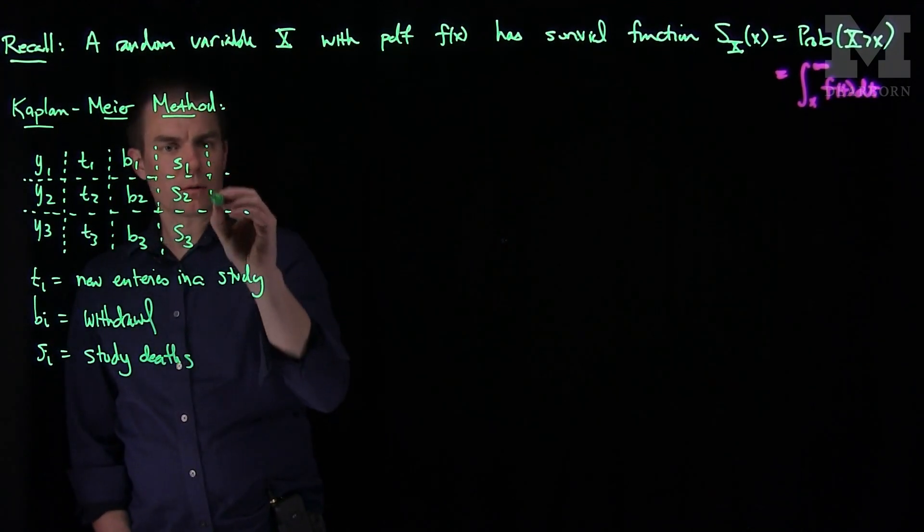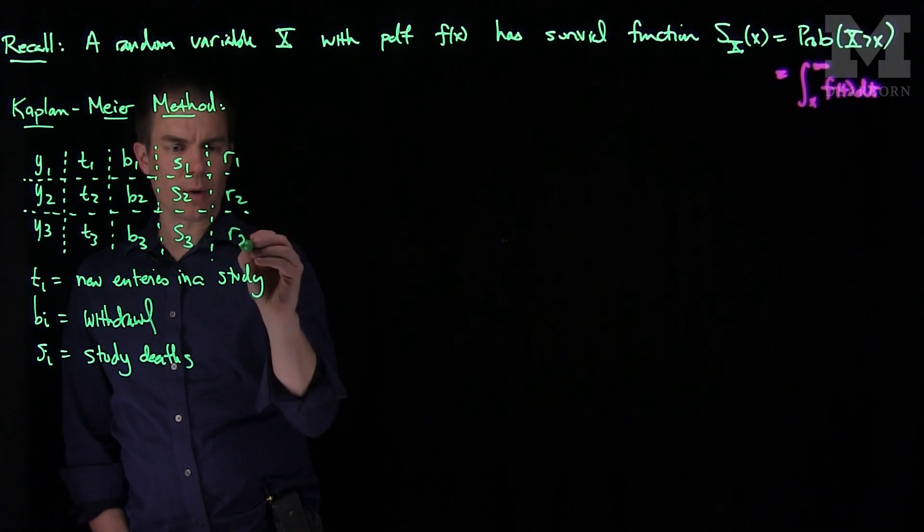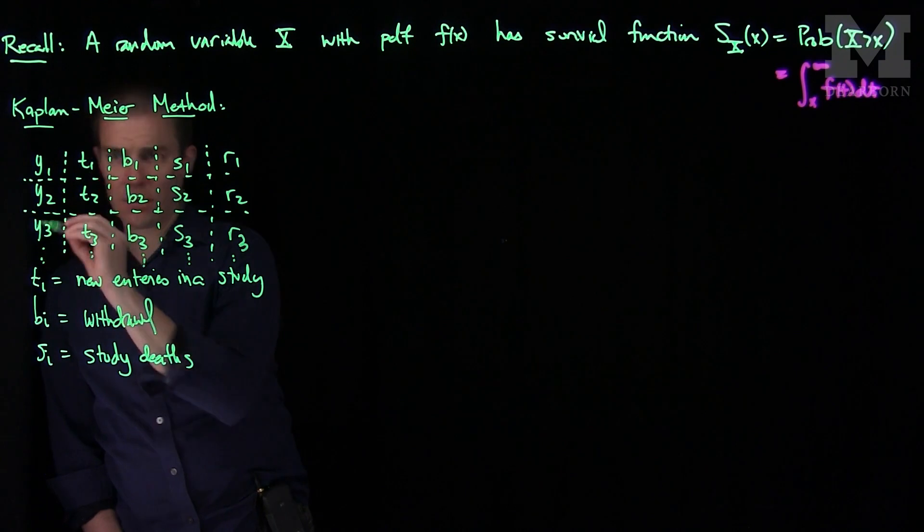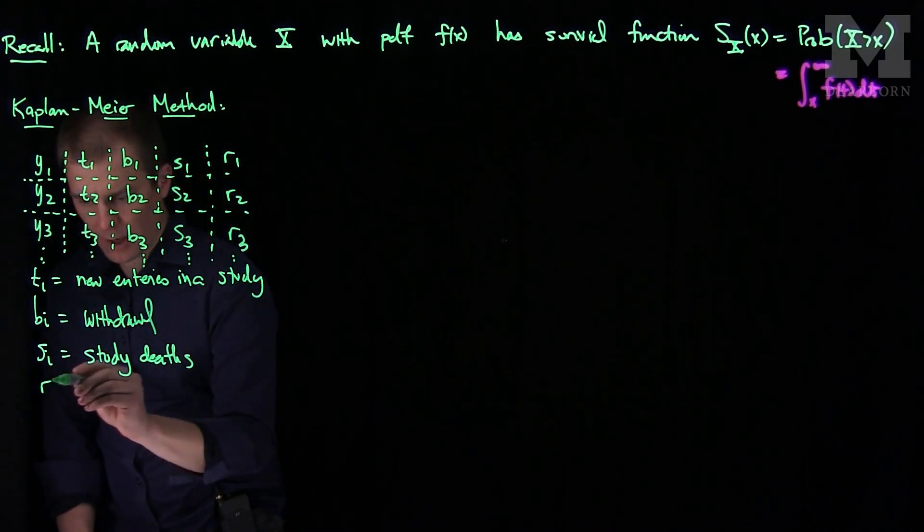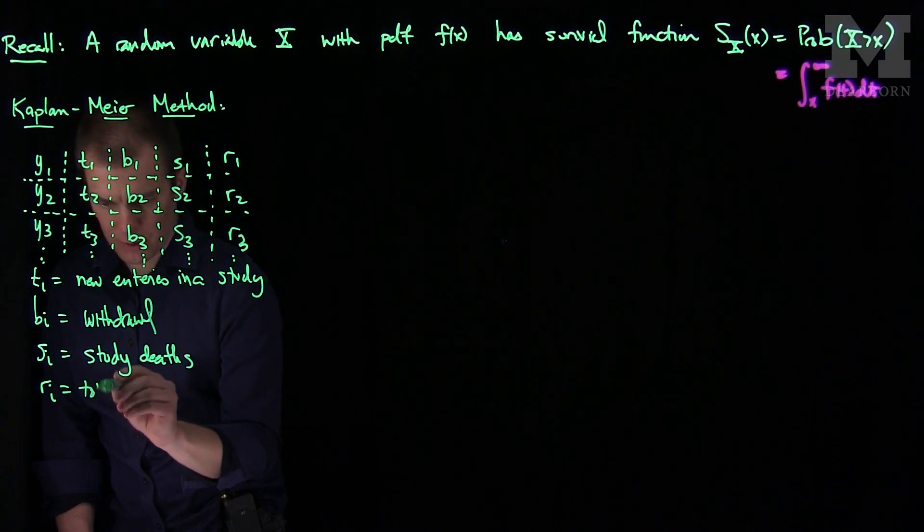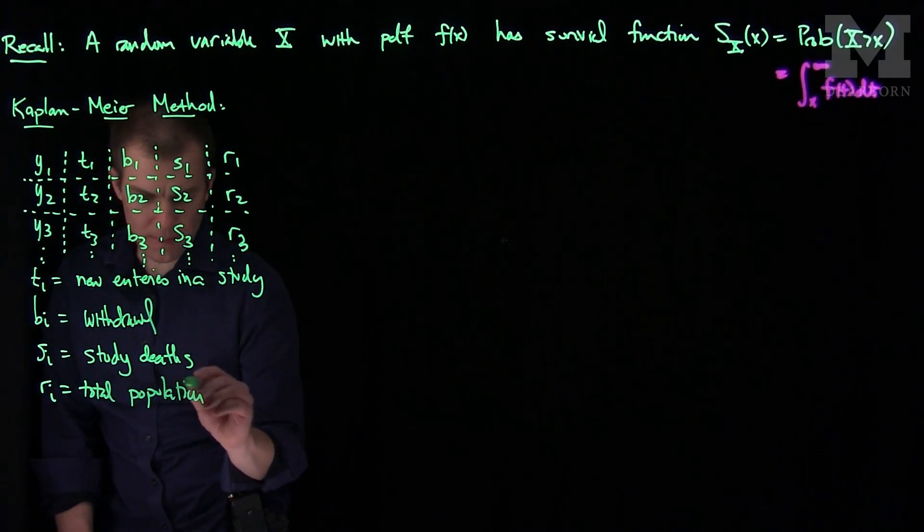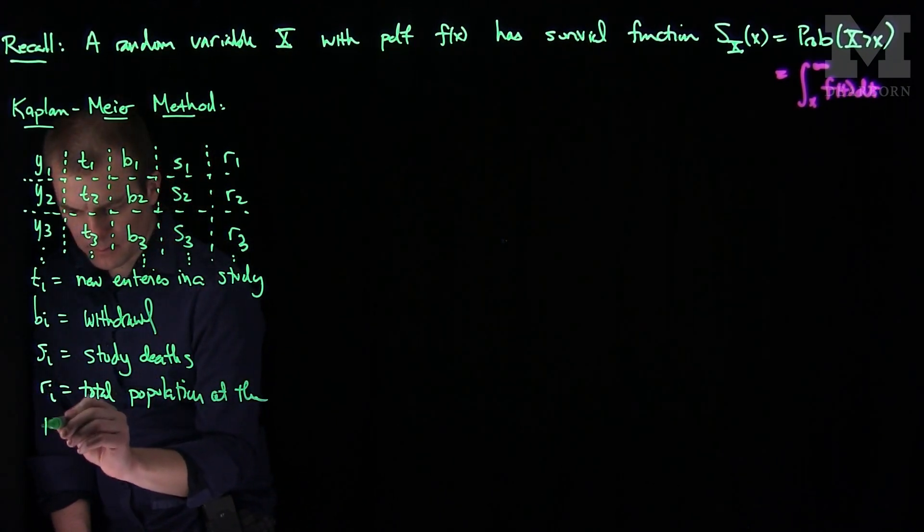And then we can have r1, r2, and r3. The r_i is the total population, so r_i is the total population at the time y_i.